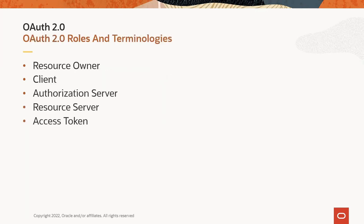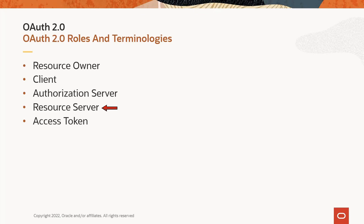This slide discusses different roles and terms used with OAuth 2.0. The resource owner is an entity capable of granting access to a protected resource. The client is an application requesting access to a protected resource on behalf of a resource owner with its authorization. OAuth services refers to the authorization server — Oracle Access Manager in this case. It provides an access token to clients after it authenticates the resource owner. The resource server hosts the protected resource; it receives the access token from the client, validates it, and allows the client access to the protected resource.